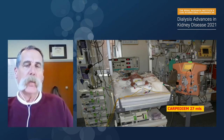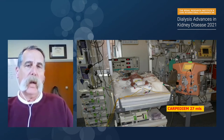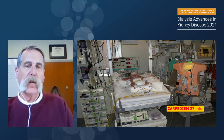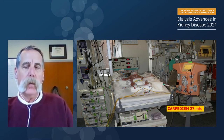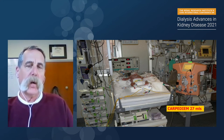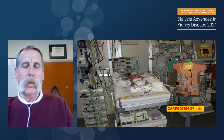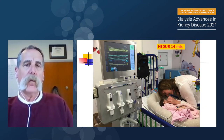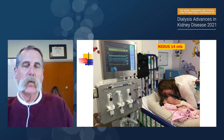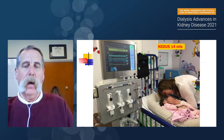Coming down the pike are other small machines. One is called the Carpe Diem, currently in clinical studies and now FDA-approved. Clinical studies have been out of Italy — this is a 27–31 mL extracorporeal circuit, usable in smaller children. The problem is the circuit must be changed every 24 hours, and one can do only convection or only diffusion — not a huge problem, except the daily disposables become very expensive. In Newcastle, they have the Nidus machine with a 14 mL extracorporeal circuit, currently in clinical studies in the UK.